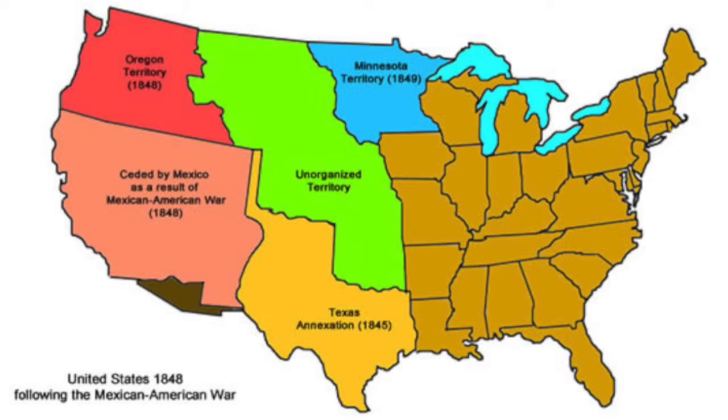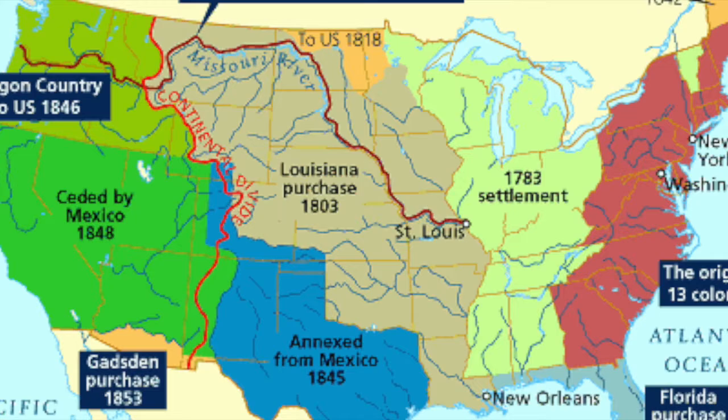The economic root was that the Southern economy grew increasingly dependent on King Cotton. Meanwhile, Northerners came to believe that the expansion of slavery negatively impacted their own economy.